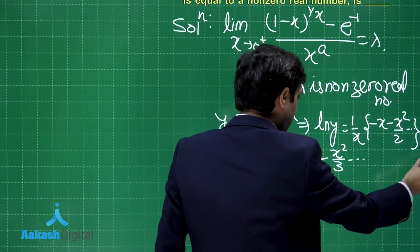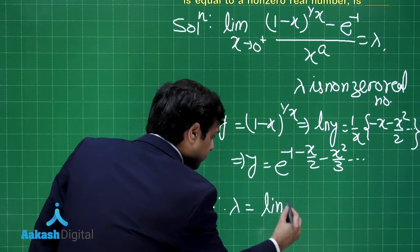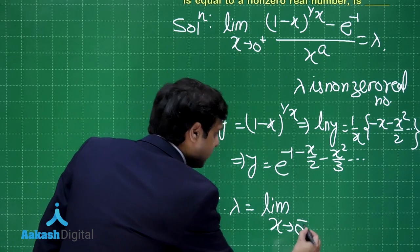That means Y is equal to e to the power minus 1 minus x by 2 minus x square by 3 and so on. I am sure this is clear. Going back to lambda. Put this value over there.